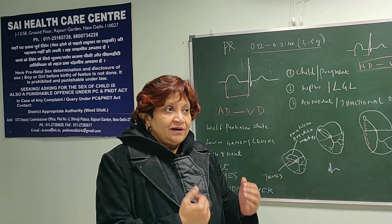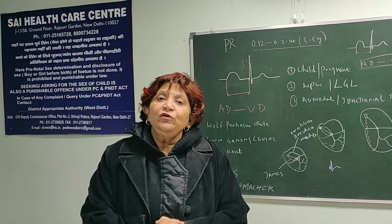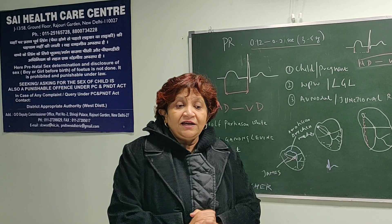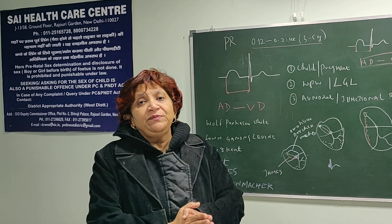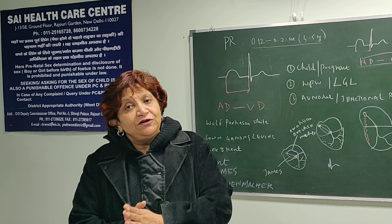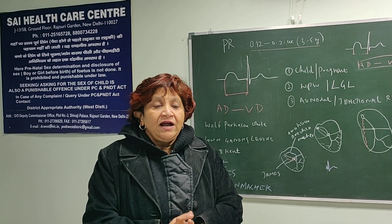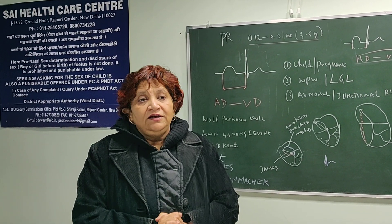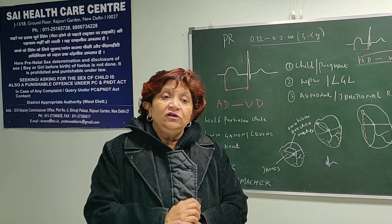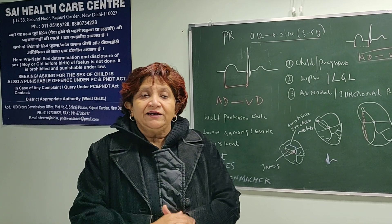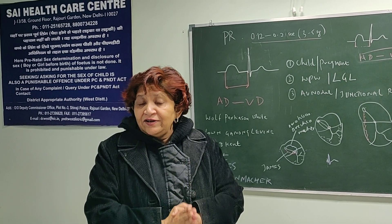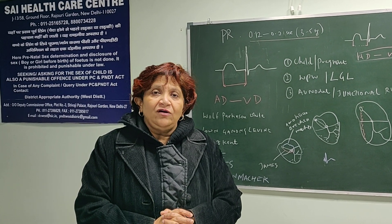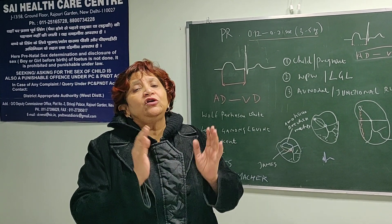We continue with the ECG session today and we are going to discuss the causes of short PR interval. PR interval is a time interval between the onset of atrial depolarization to the onset of ventricular depolarization. This time is 3 to 5 small segments on the ECG, that means 0.12 second to 0.2 second or 200 milliseconds. If the PR interval is less than 3 small segments, that means 0.12 second or 120 milliseconds, then this is called a short PR interval.